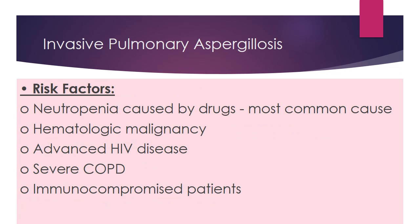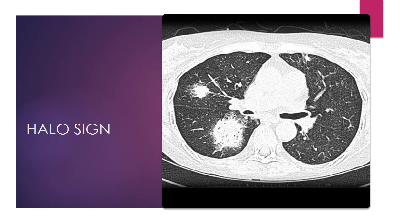Next is invasive pulmonary aspergillosis. Risk factors include neutropenia caused by drugs (most common), haematological malignancy, advanced HIV disease, severe COPD, and immunocompromised patients. The CT scan shows nodular consolidation associated with a halo of ground-glass opacity, which represents haemorrhage resulting from invasive pulmonary aspergillosis.